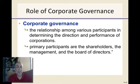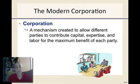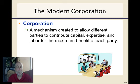But what is the governance element? Well, this is how we define the relationship among the various participants, determining the direction, and how the performance of the corporation is supposed to be assessed. The primary participants are the shareholders, or the owners — the people who actually own the company — the management, and the board of directors. The corporation is a mechanism created to allow different parties to contribute capital, expertise, etc., and it's for the benefit of everybody.